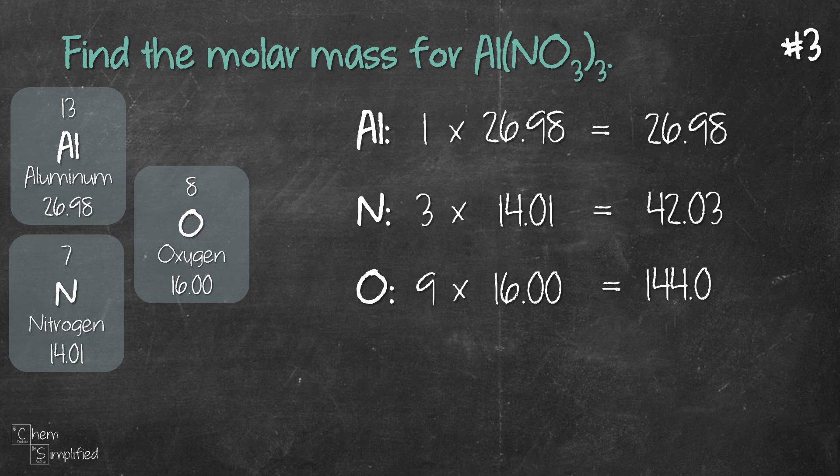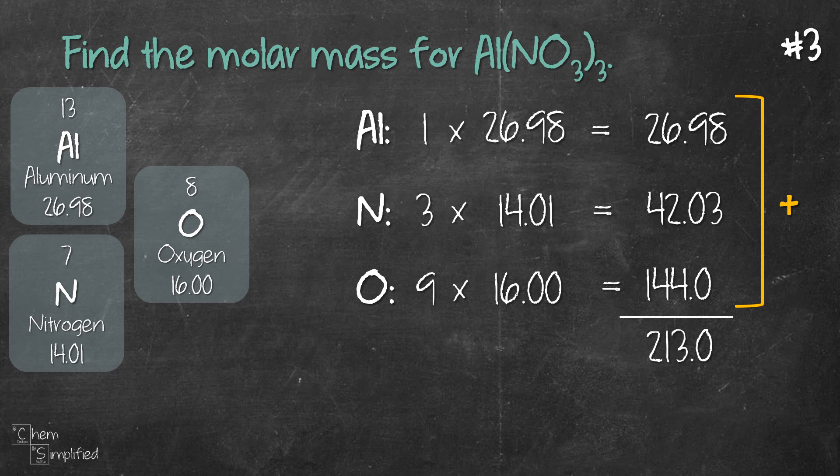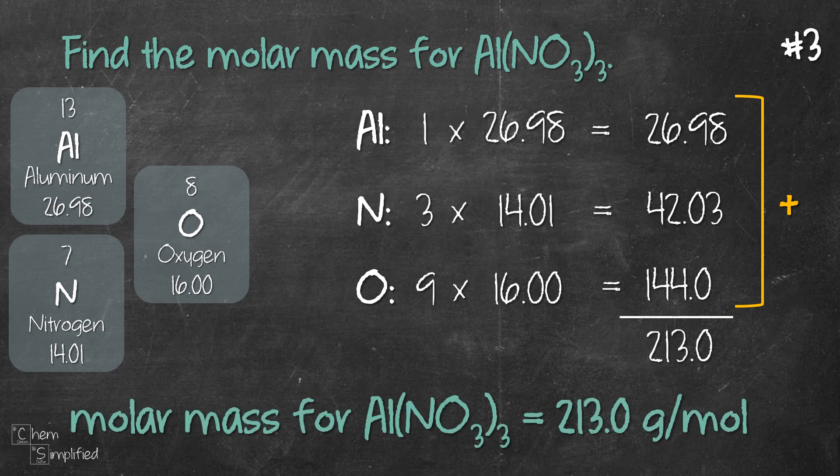And then we sum them up and we get 213.0. So the molar mass for aluminum nitrate is 213.0 grams per mole.